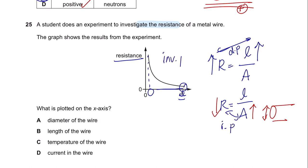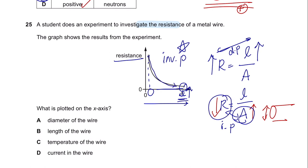This graph shows an inversely proportional relationship, meaning as cross-sectional area increases, resistance decreases. So what should be plotted on the x-axis is cross-sectional area, which can be changed by varying the diameter of the wire. The answer is E.